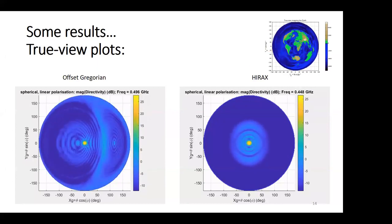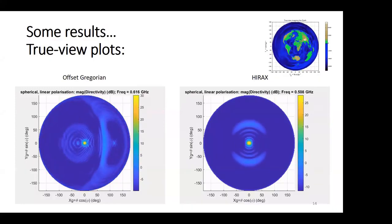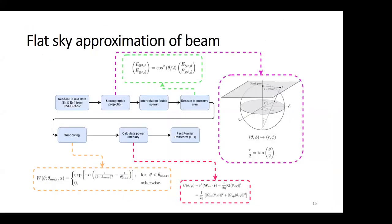To actually get to something that you can convolve with the sky, you read in the E-field data specifically defined with their polarization for Ludwig's third definition.